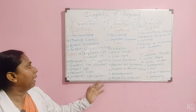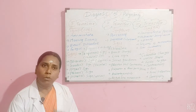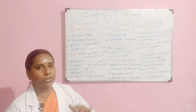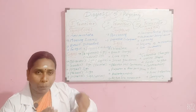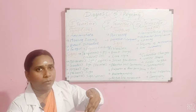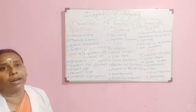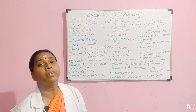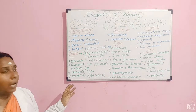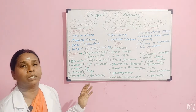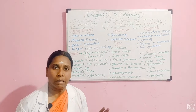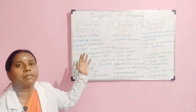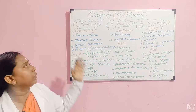Then we have the Hegar sign. In a bimanual examination, your right hand performs a vaginal examination while your left hand is placed over the abdomen. When you palpate, both hands or fingers can touch each other — that is called the Hegar sign. Next is the Palma sign: regular and rhythmic uterine contractions. Finally, the Piskacek sign, also a uterine sign — the uterus feels soft and elastic during the pregnancy phase. These are all the signs and symptoms used to diagnose pregnancy in the first trimester.